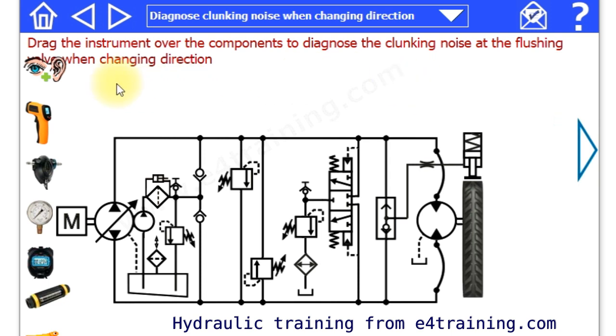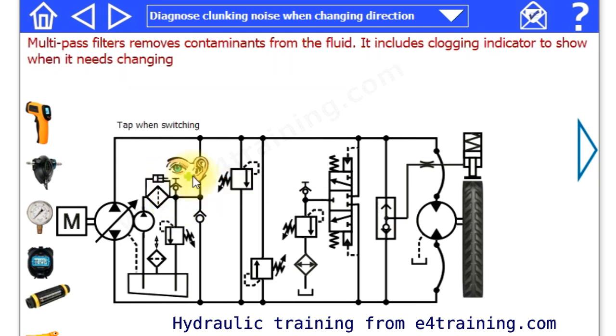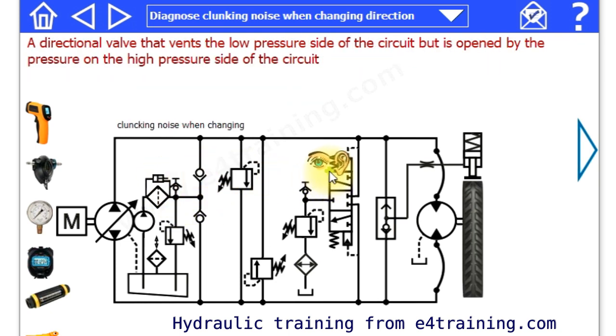But finally a nice little exercise is we've got some diagnostics. So we've got a problem which is we're getting some clunky noise when we change direction. It's not very smooth. If we remove the various instrumentation over the circuit. So we'll be looking and listening and hearing a clunky noise coming from our flushing valve.